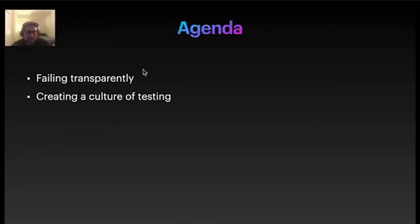Here's today's agenda. The presentation will be divided into two areas to set yourselves up for success. First, I'll talk about failing transparently — what it means to fail in a way that people know what's going on, understand enough about the system under test to act on it, and the tests are transparent in how they're failing. The second section, I'll be talking about creating a culture of testing at your organization so that anybody can write tests, contribute to tests, triage tests, et cetera.